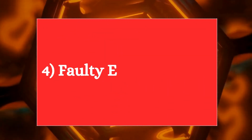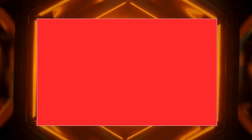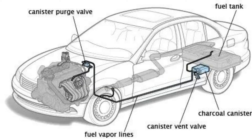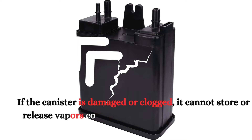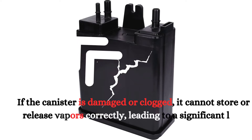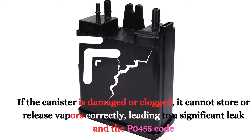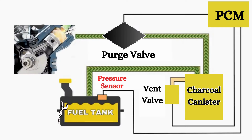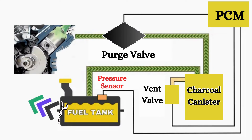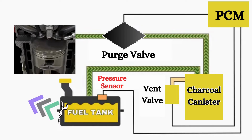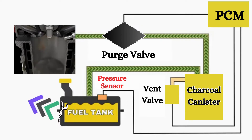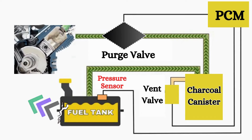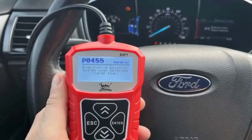4. Faulty EVAP canister. The EVAP canister stores fuel vapors until they are purged into the engine. If the canister is damaged or clogged, it cannot store or release vapors correctly, leading to a significant leak and the P0455 code. 5. Faulty fuel tank. A damaged or cracked fuel tank can directly release fuel vapors into the atmosphere. This large leak disrupts the EVAP system's ability to maintain the correct pressure, causing the P0455 code.